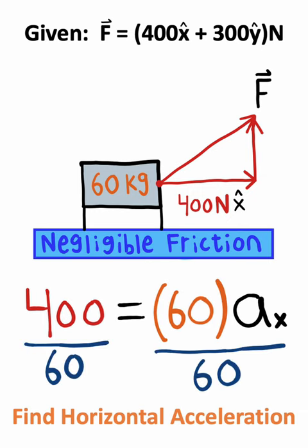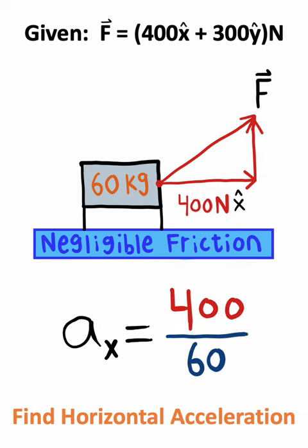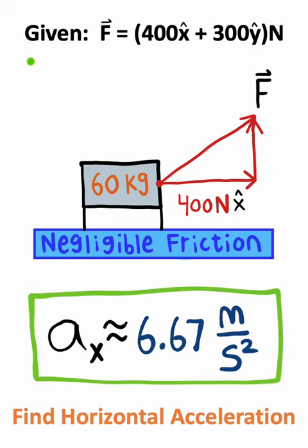So what I can do is take 60 and divide it on both sides of this equation, giving us that acceleration is 400 divided by 60, which is equal to 6.67 meters per second squared. That's the answer.